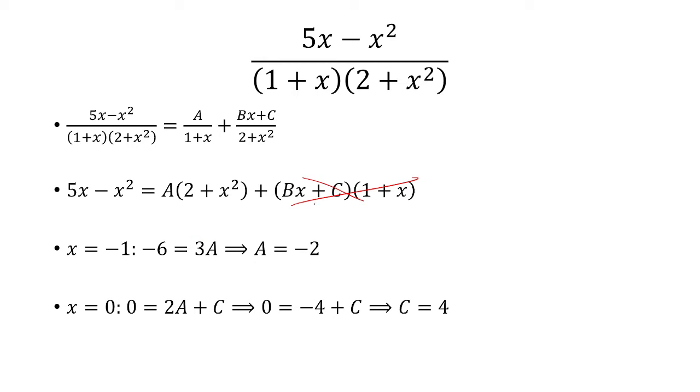Now I'm going to plug in x equals 0. So if x is 0, the left here is 0. And then we have 2 plus 0 is 2, so that's 2A. B times 0 is 0, so that's going to be plus C, and then C times 1. So 0 is equal to 2A plus C. A we set as negative 2, so 2 times negative 2 is negative 4, and so we solve for C to get 4.